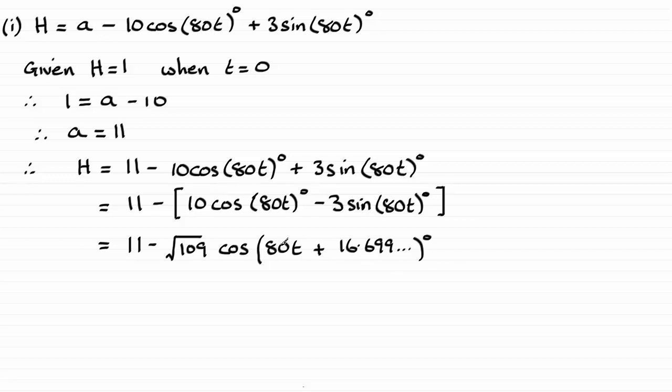And it's best to look at this version of the formula for h. Because we've got two terms, we've got this constant term 11, and we've got this second term here, which is going to vary depending on the value of t.